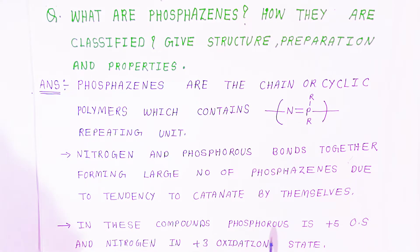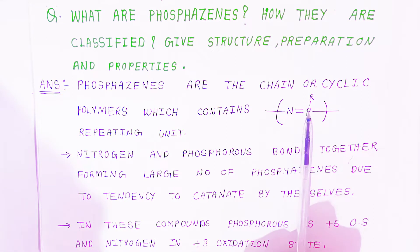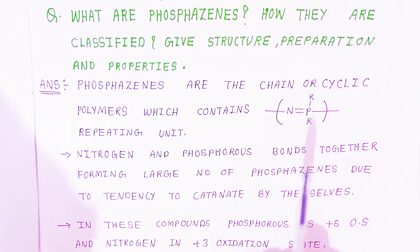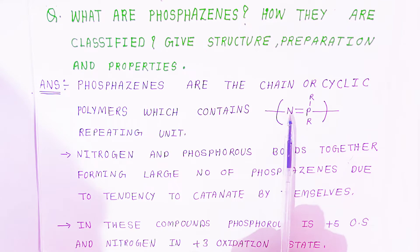In these compounds, Phosphorus is in the +5 oxidation state and Nitrogen is in the +3 oxidation state. The oxidation state of nitrogen will always be +3.